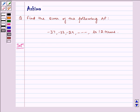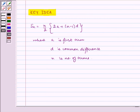Now before writing the solution, let us look at the key idea. Here Sn equals n by 2 multiplied by 2A plus n minus 1 multiplied by D, where Sn is the sum of the AP, A is the first term, D is the common difference, and n is the number of terms.